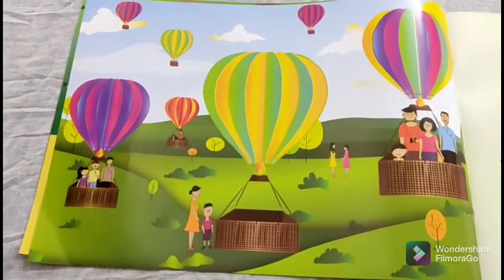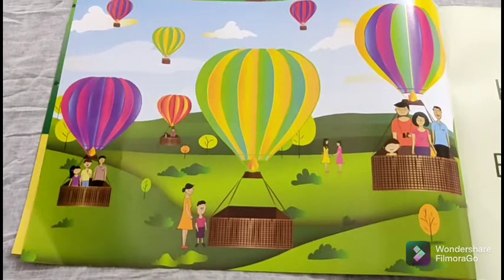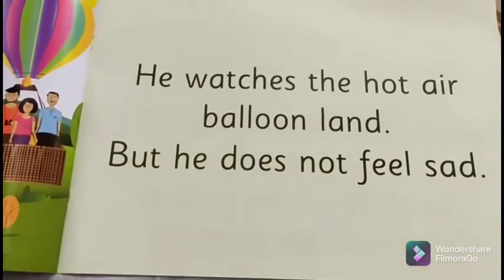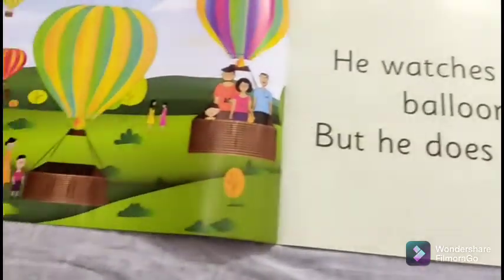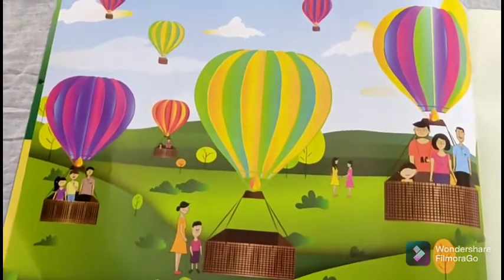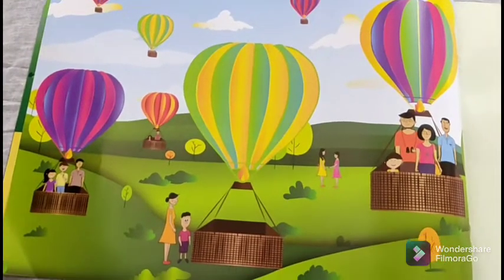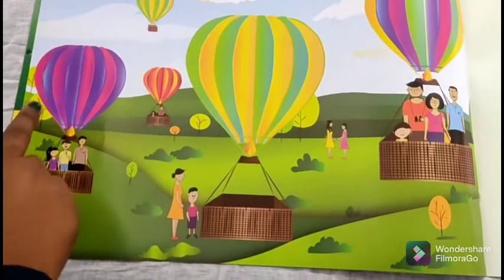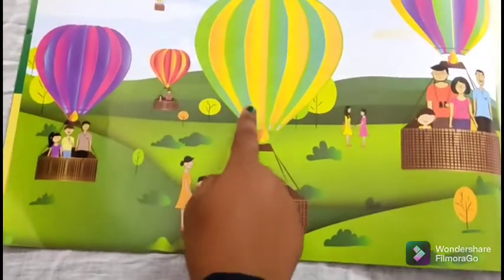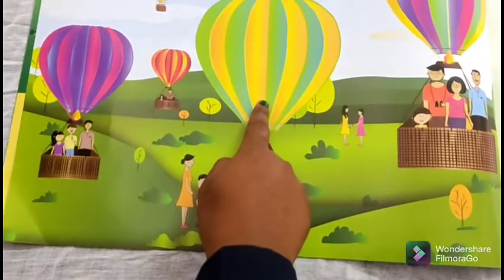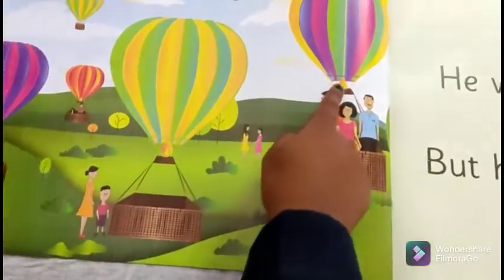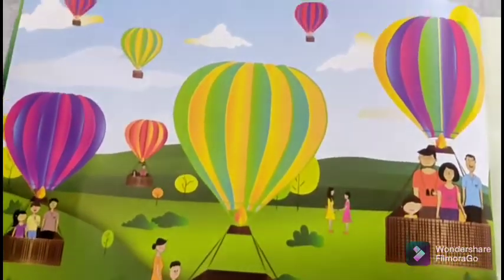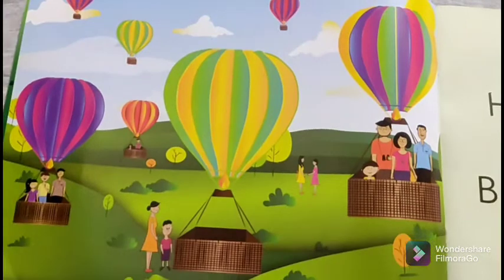Can you pick out words that describe or tell us about the hot air balloon? The hot air balloon is very beautiful. It has stripes on it. It is colorful — it has many colors: pink, violet, yellow, and green. The third one is more colorful. It is very beautiful and huge with lovely stripes.